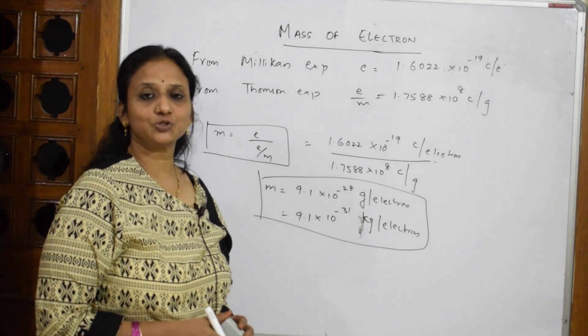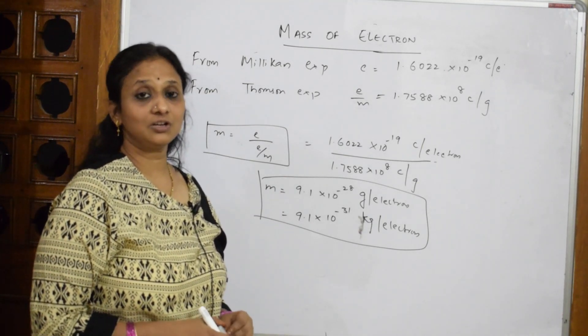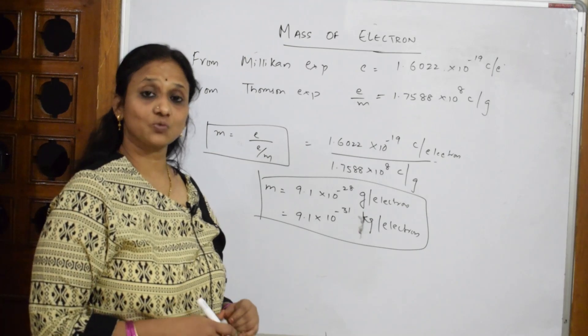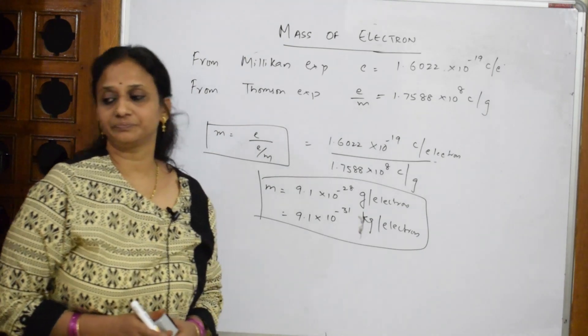This is your complete information about cathode rays — starting from cathode ray properties, E/M ratio by J.J. Thomson, Millikan's oil drop experiment, and the calculation of mass. Now let's come back and do the next important model: Thomson's model, also known as the watermelon model.